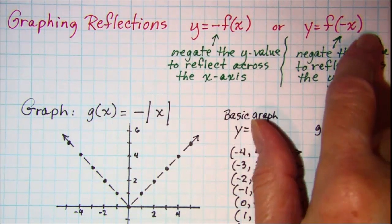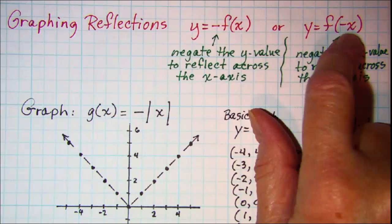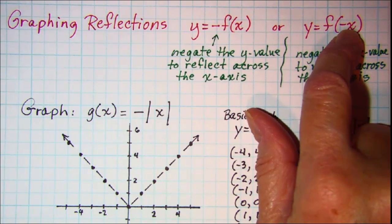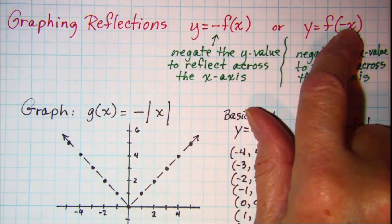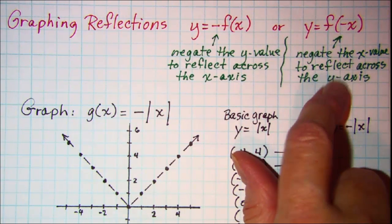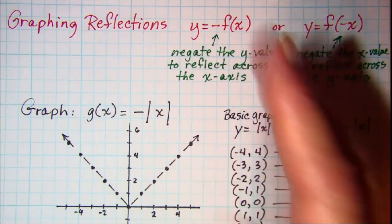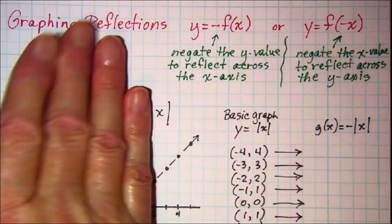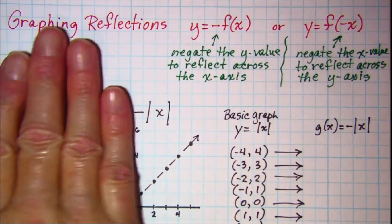If you negate the x, if you see a negative inside of the function and all of the x's are negated inside, then you're reflecting across the y-axis. So you may possibly go from a positive x value to a negative x value or vice versa.